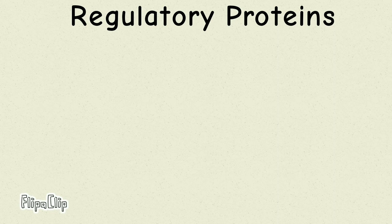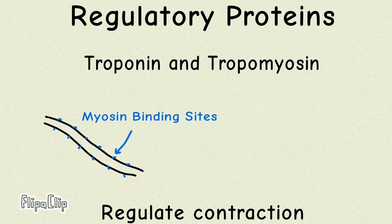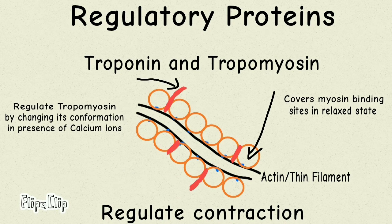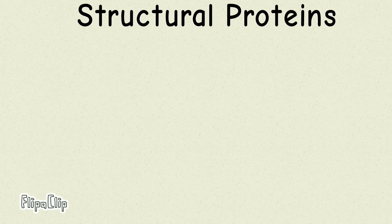The second class of proteins are regulatory proteins. As the name suggests, regulatory proteins regulate the contraction of a muscle cell or fiber. Regulatory proteins are tropomyosin and troponin — they act as a switch. Both are present on the actin or thin filament. Troponin regulates the action of tropomyosin by changing its conformation in the presence of calcium ions. Whenever calcium ions bind to troponin, it causes changes in tropomyosin. Tropomyosin, which covers the myosin binding sites, moves away and the myosin binding sites are rendered free for myosin heads to bind. More about how exactly this regulation works will become clear when we study the sliding filament theory.